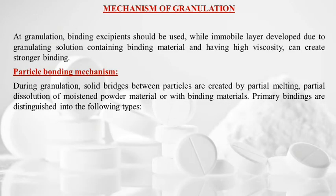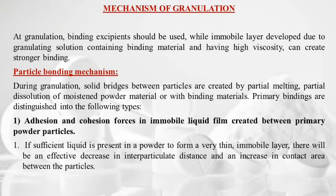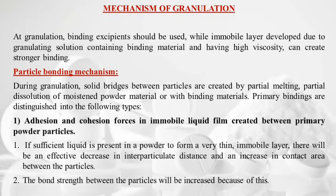Particle bonding mechanisms during granulation: solid bridges between particles are created by partial melting, partial dissolution of the powder material, or with binding materials. Primary bindings are of five types. First is adhesion and cohesion forces in the immobile liquid film created between primary powder particles — if sufficient liquid is present to form a thin immobile layer, there is an effective decrease in interparticulate distance and increase in contact area, leading to stronger bonding.